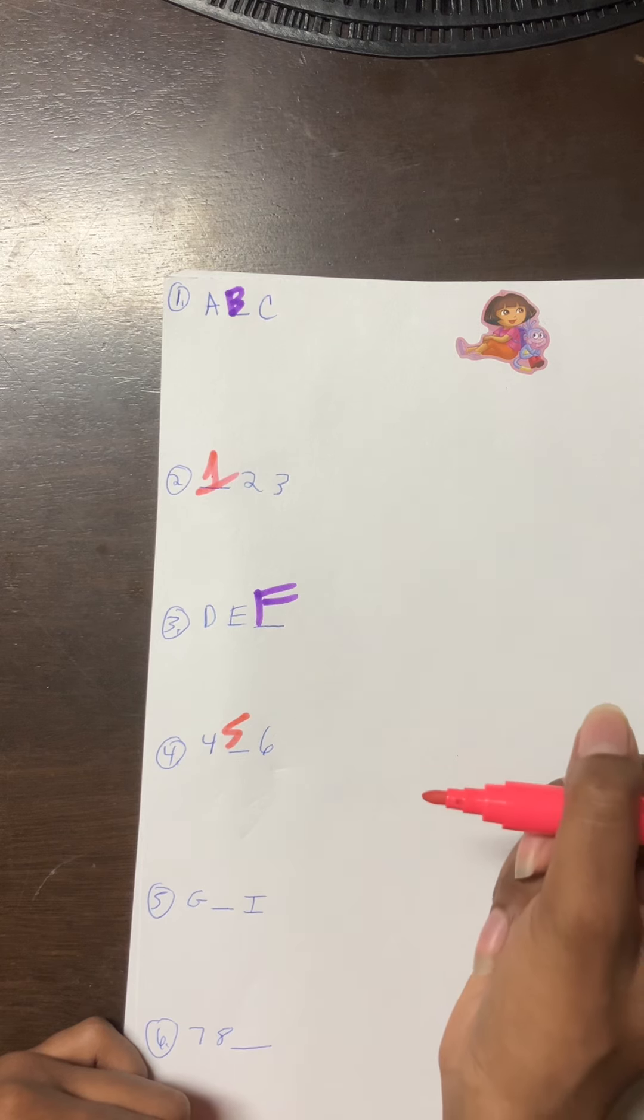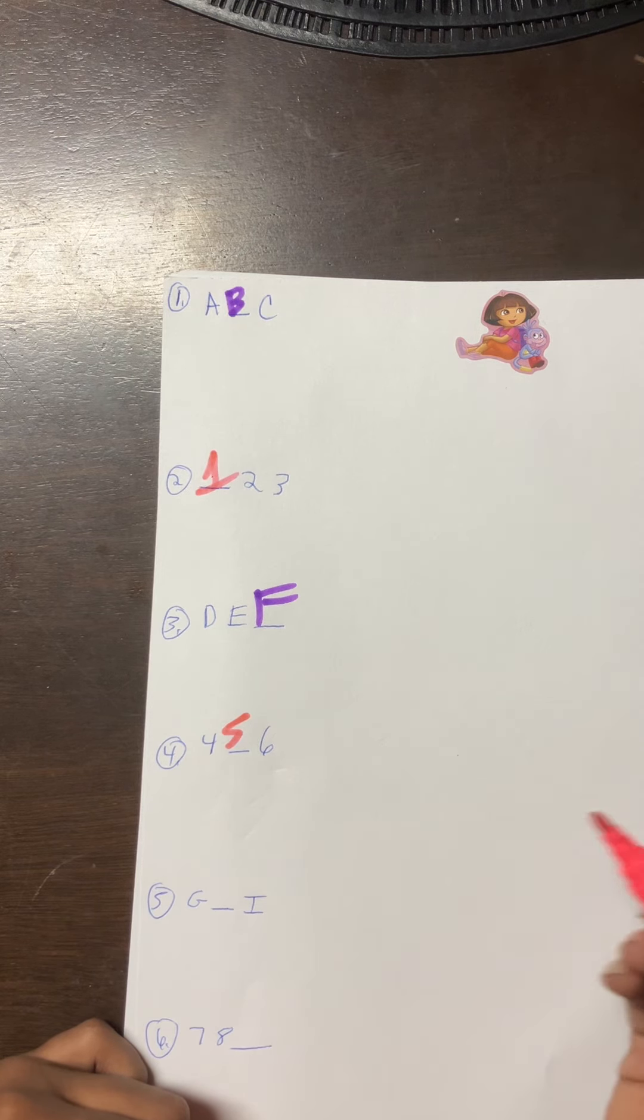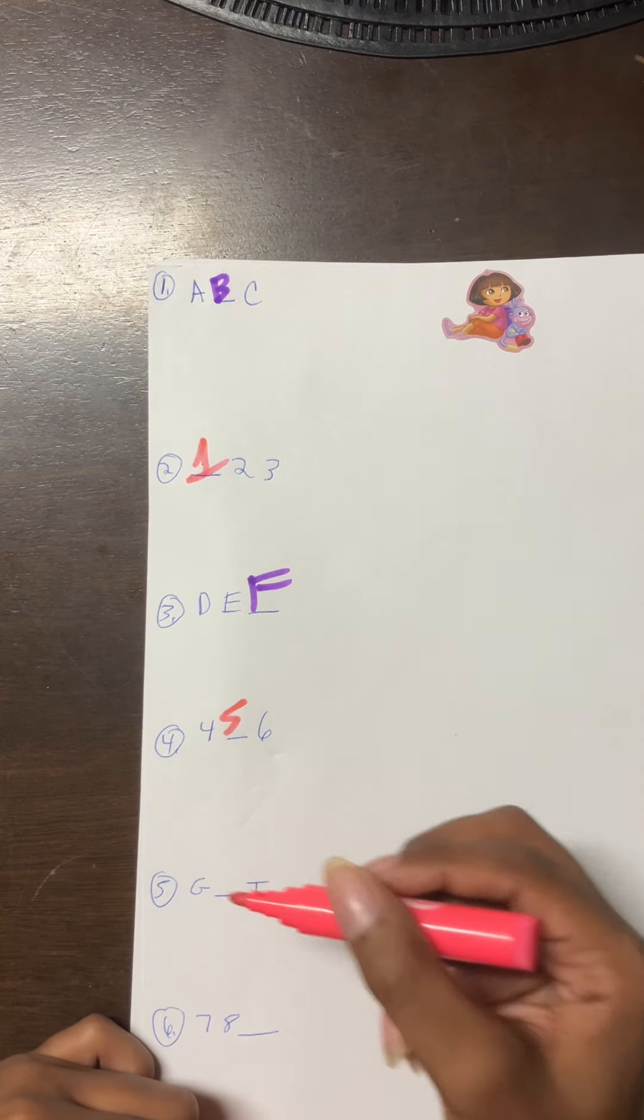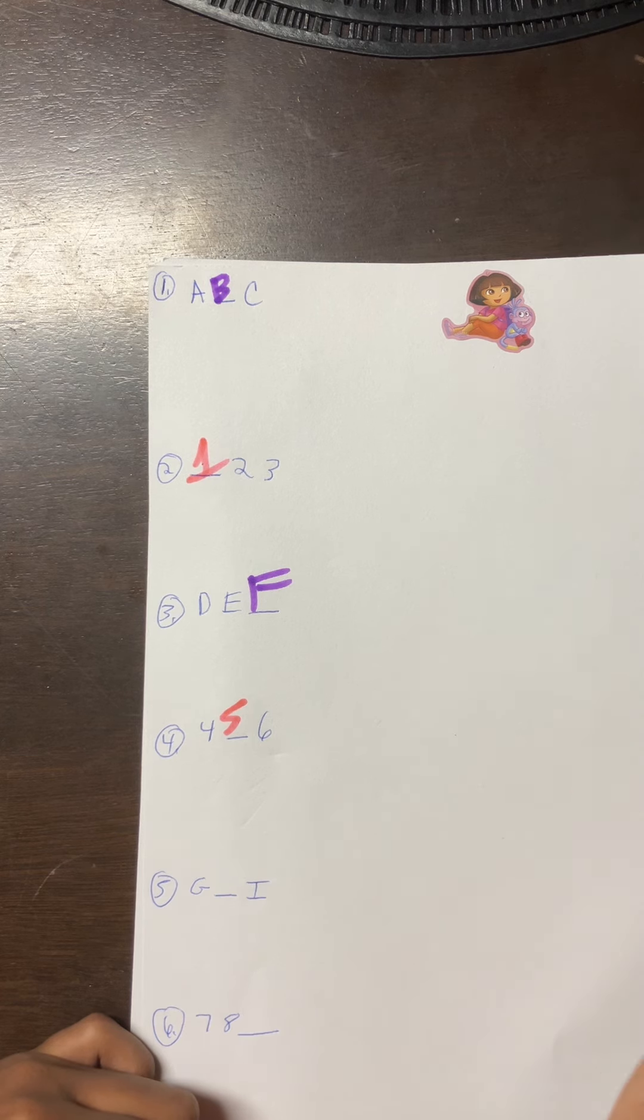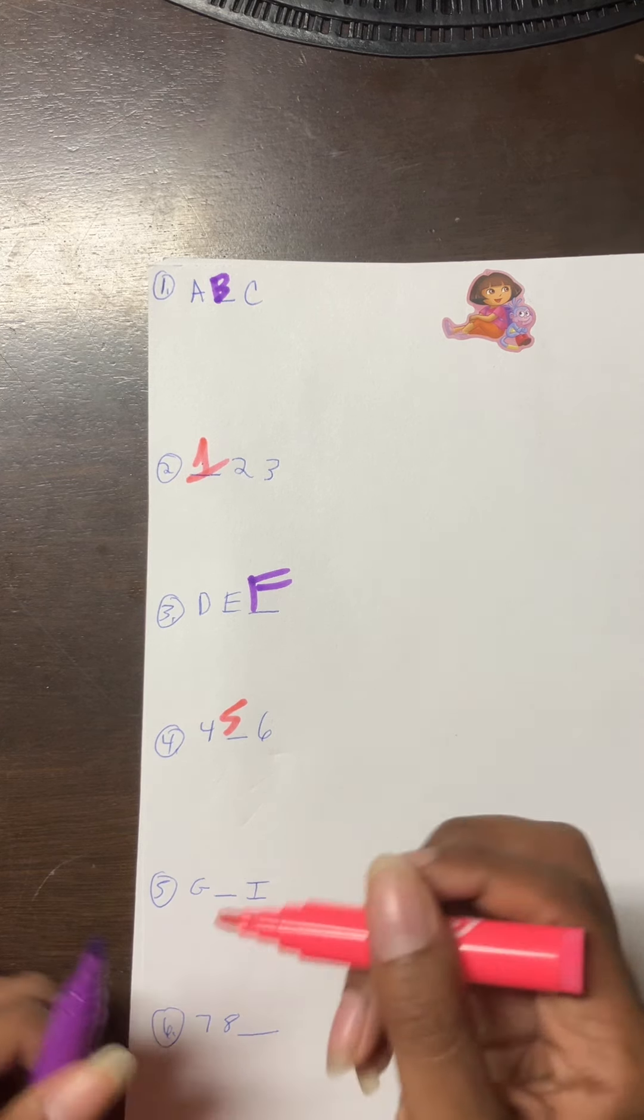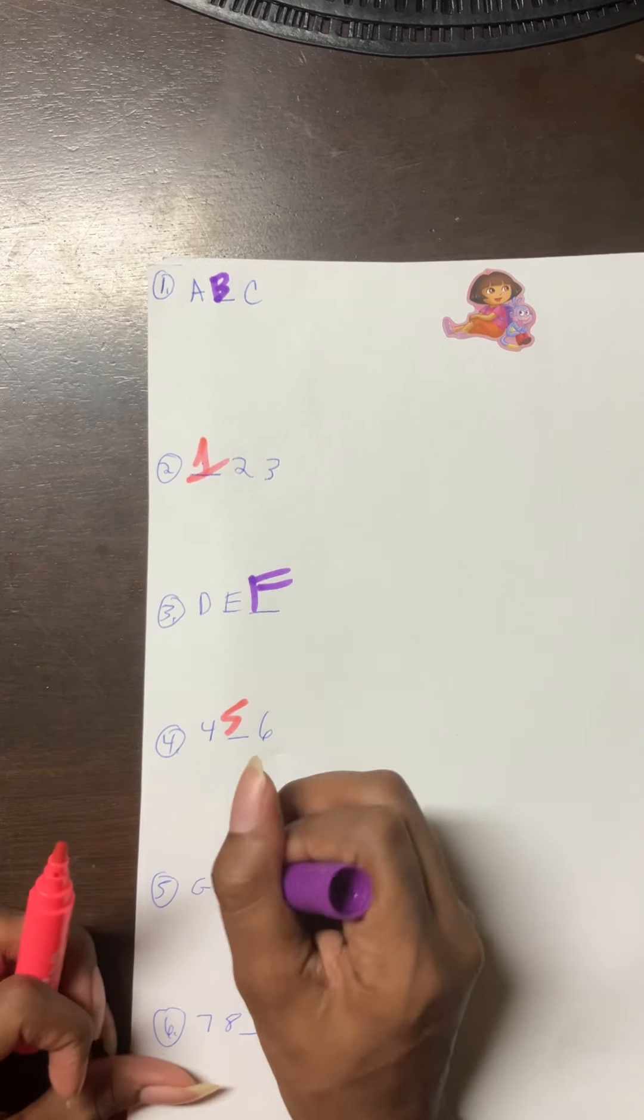Number five: G blank I. So it's A B C D E F G H. So we're gonna write H.